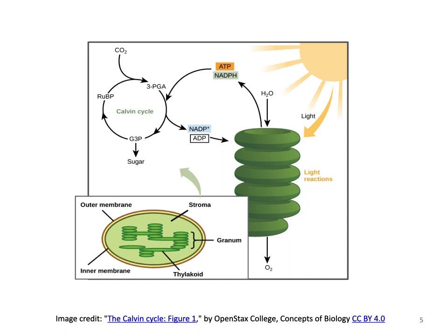This slide is an overview structure of a chloroplast, where we can locate the stroma and thylakoid. The green stack here is the granum, which consists of individual thylakoids stacked together.